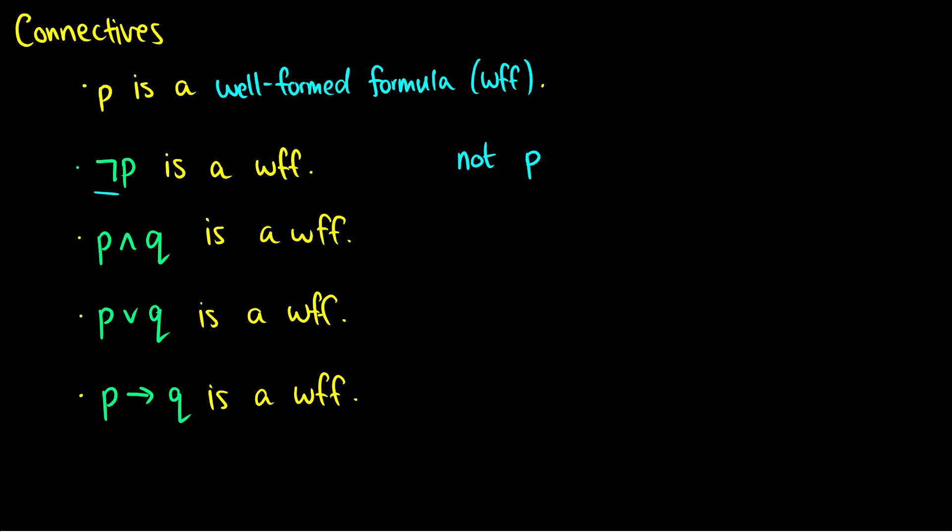The second one says that P and Q is a woof. So if P is a woof and Q is a woof, then we can connect them together for P and Q as a woof. And this is also known as a caret. That is the and symbol, that is a caret. Third, P or Q is a woof. So this is P or Q, and sometimes you might just call it P vee Q or P wedge Q.